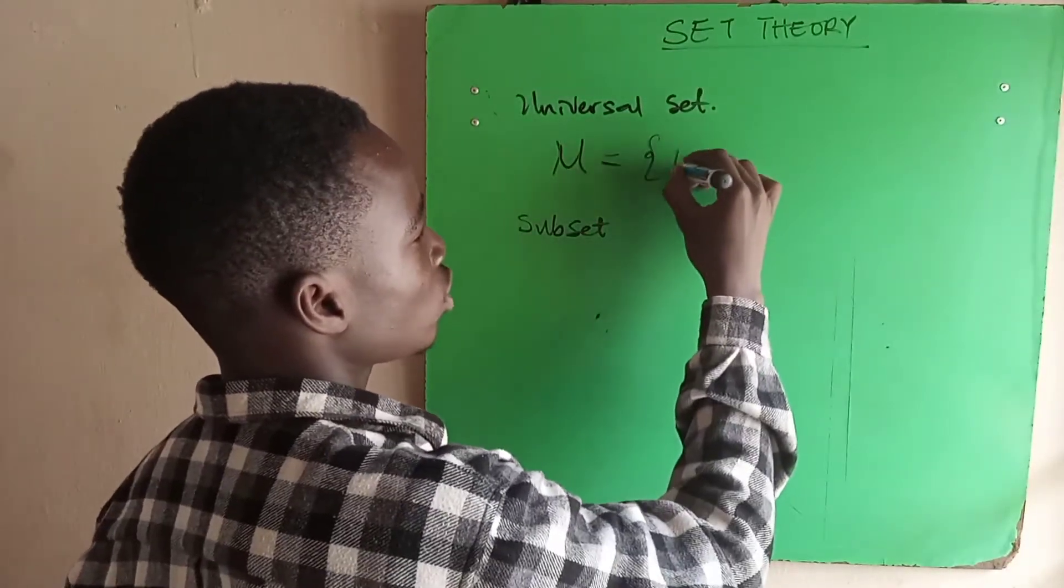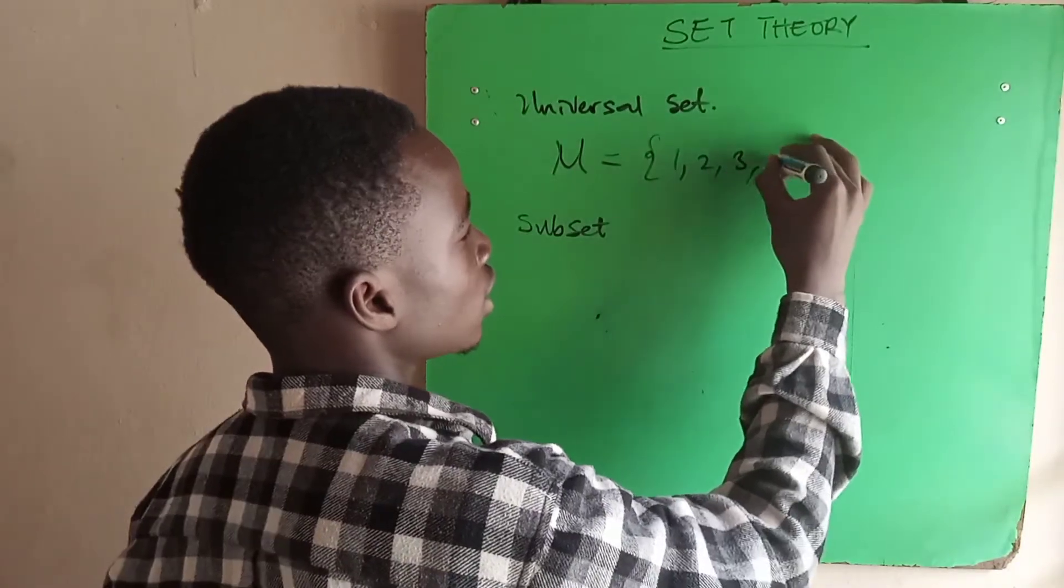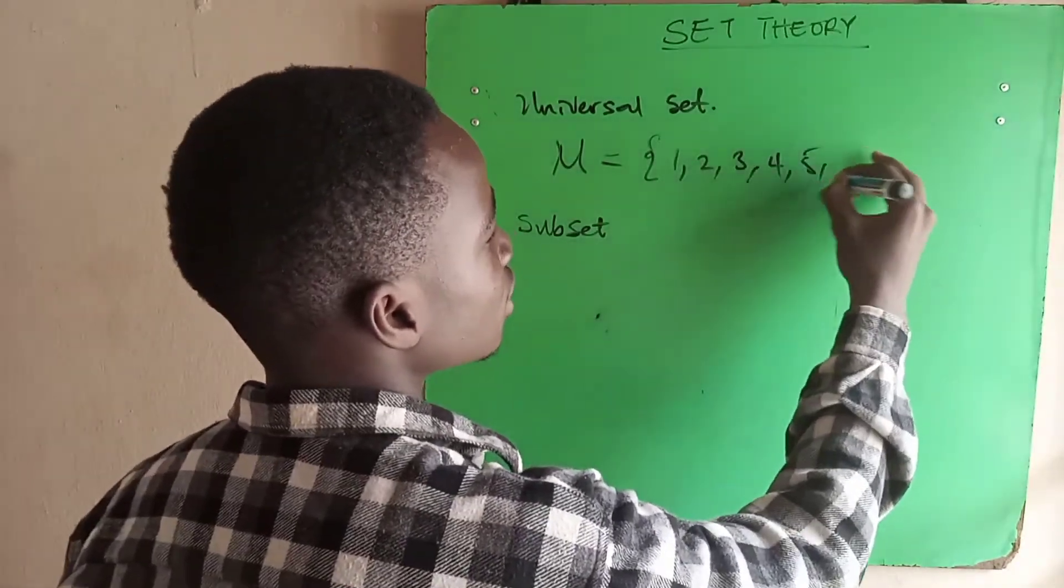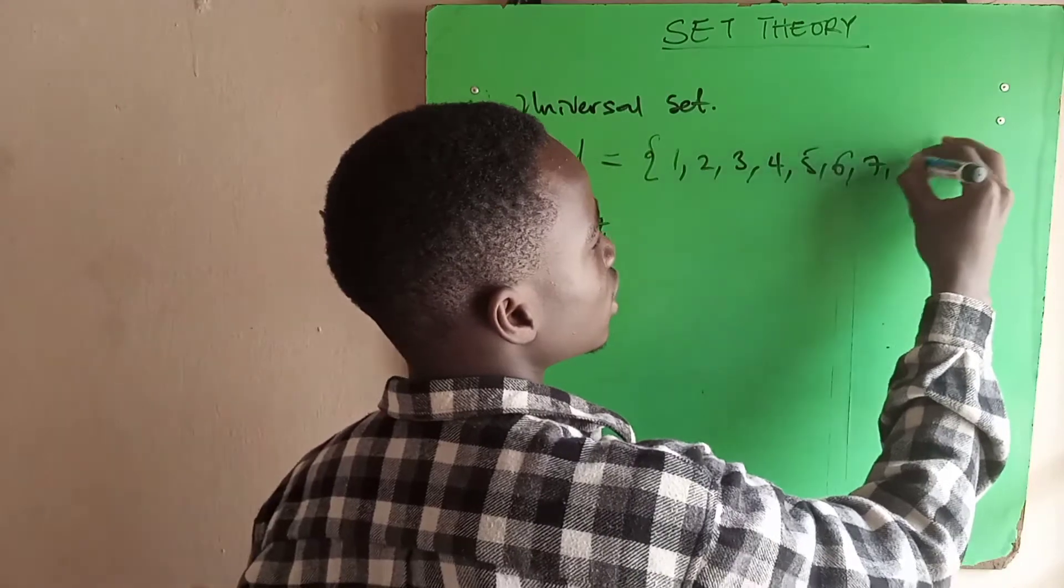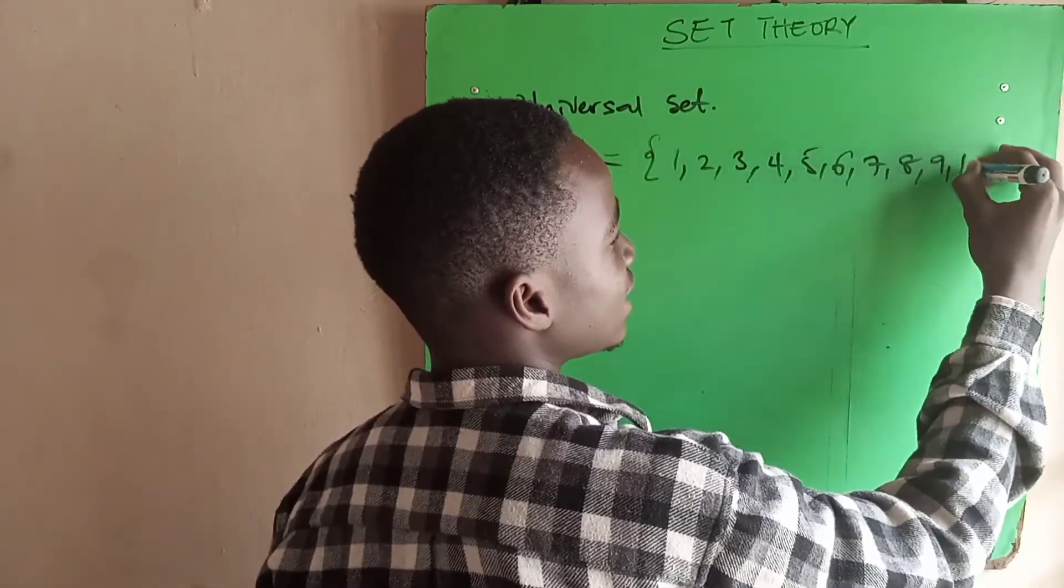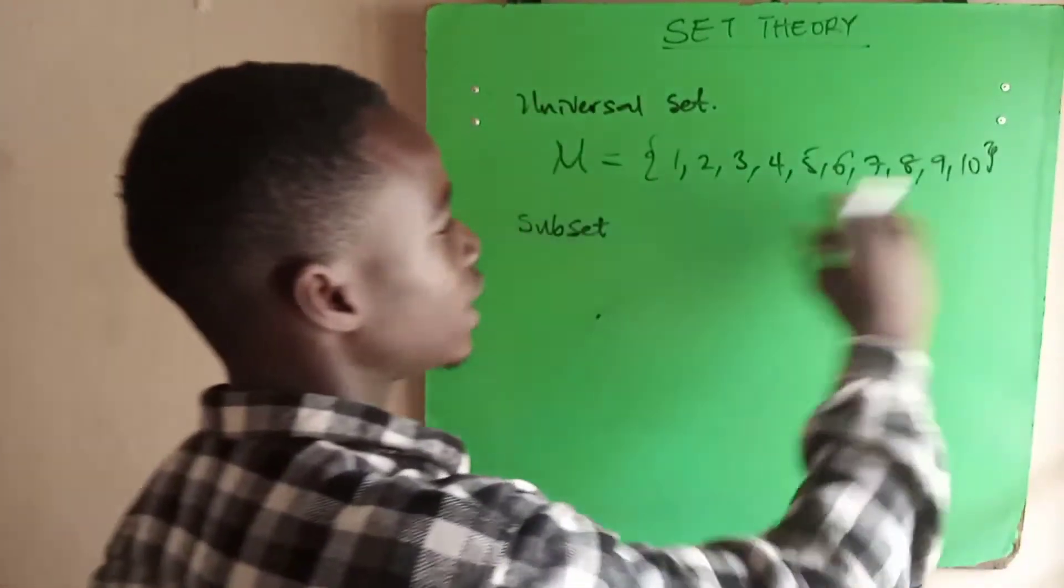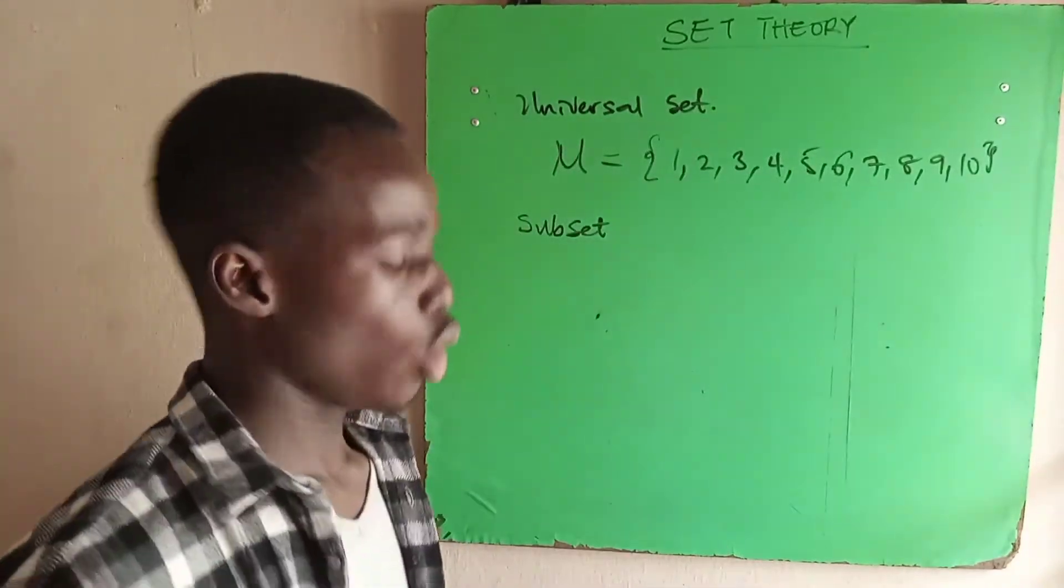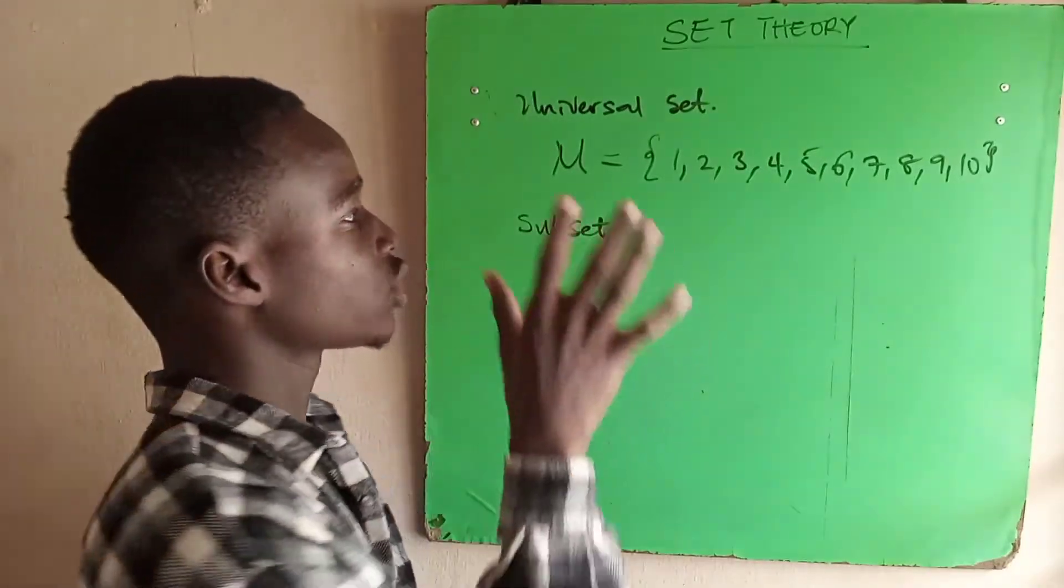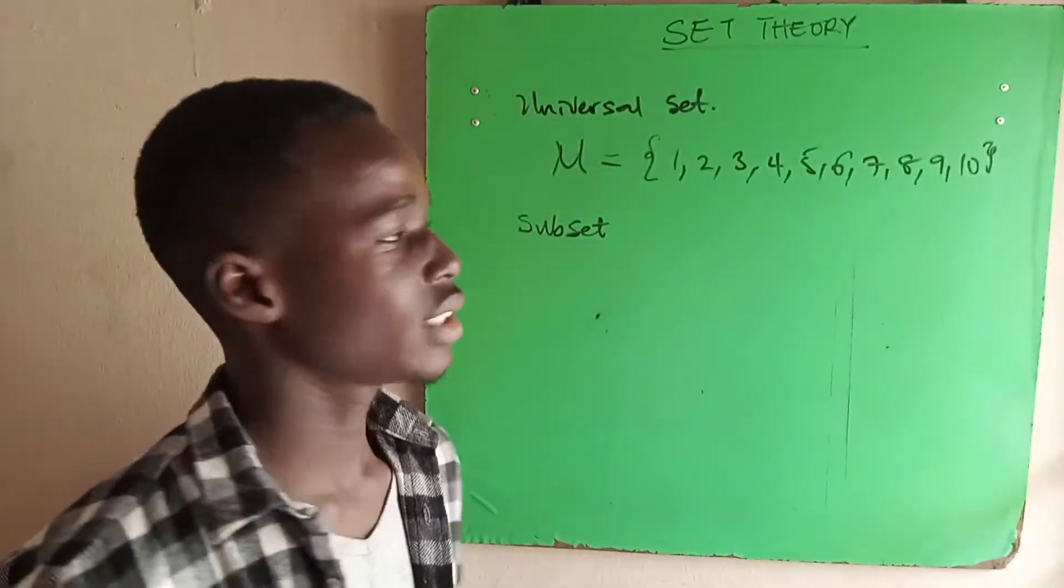This is a set that contains all elements and it is represented with this symbol. So if you have a universal set, all numbers from 1 to 10, we have 1, 2, 3, 4, 5, 6, 7, 8, 9, 10. These are all the elements contained in the universal set.